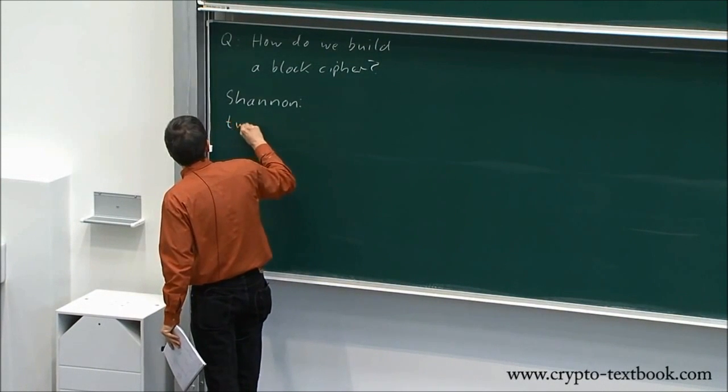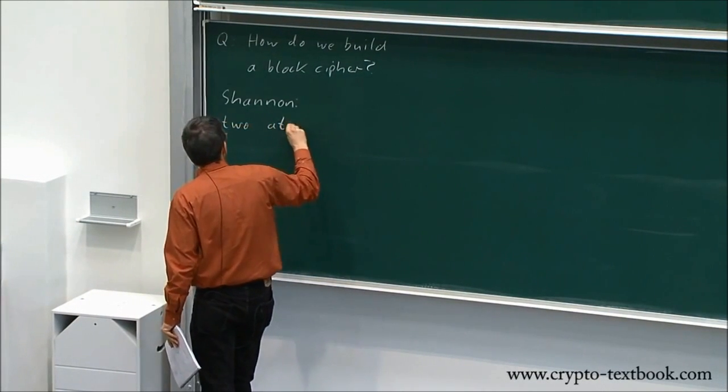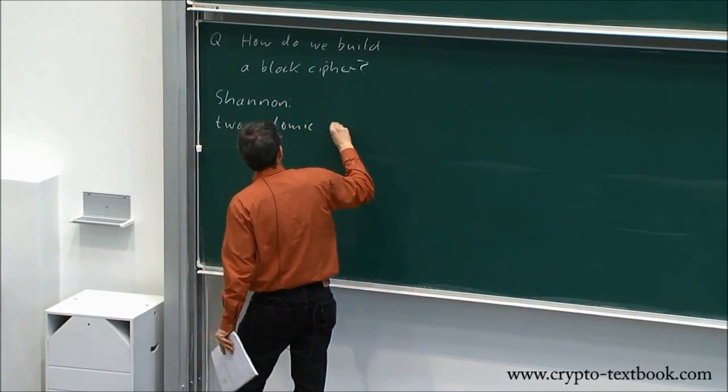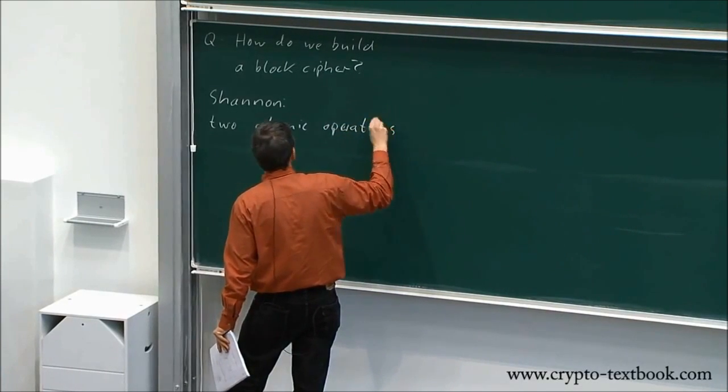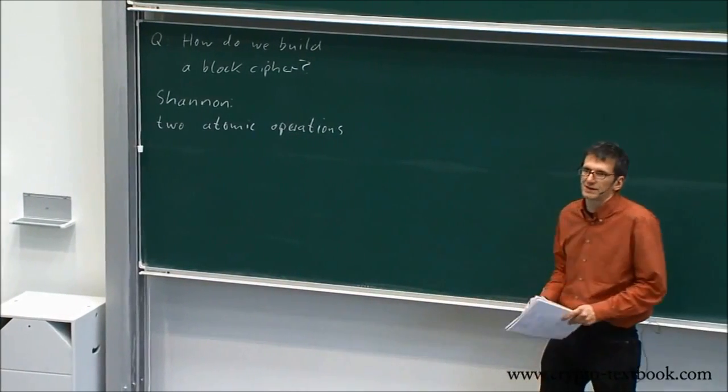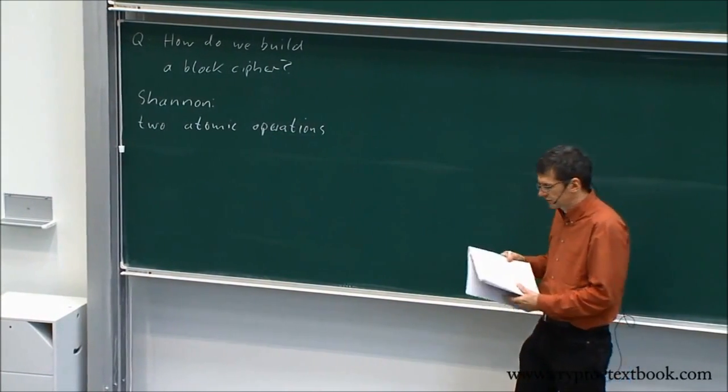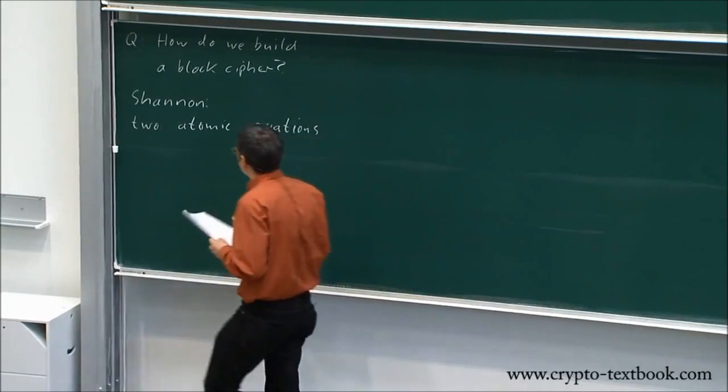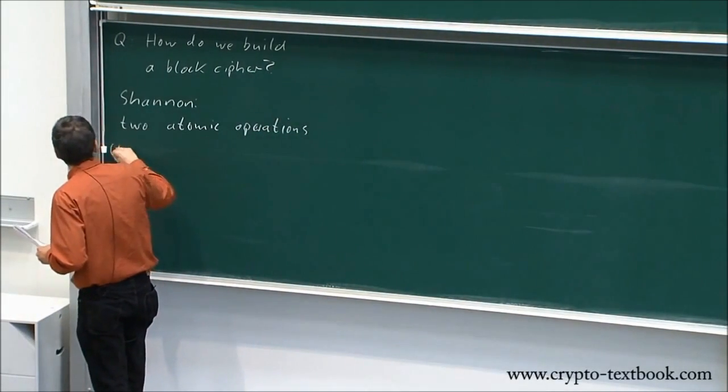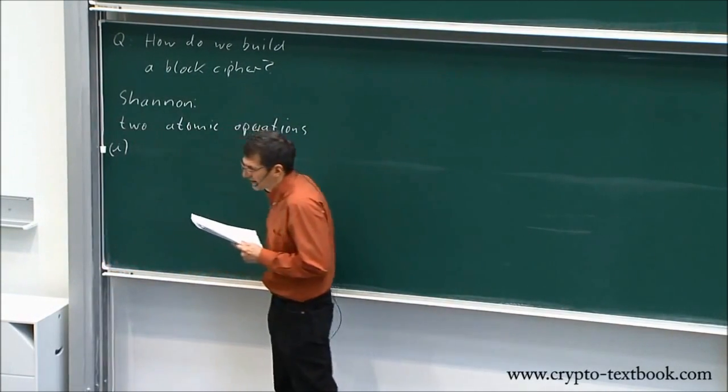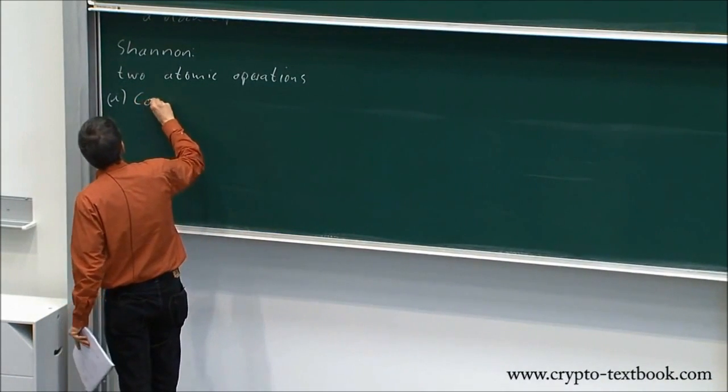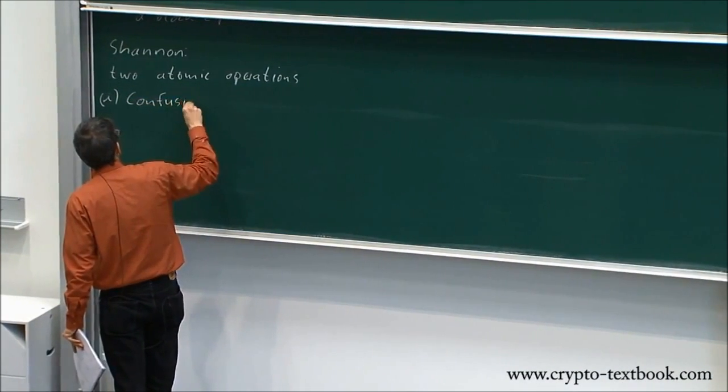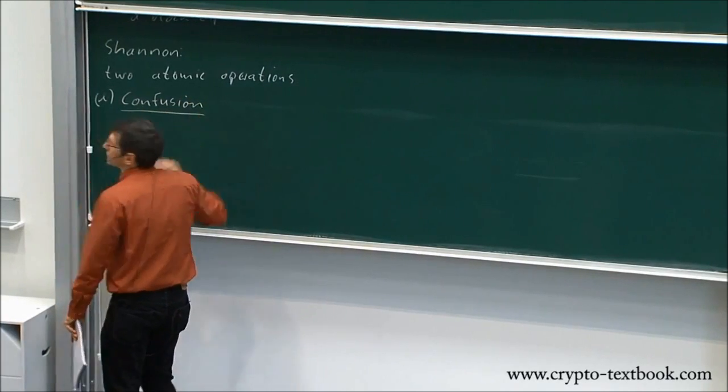He defined two atomic operations - or basic operations, atomic is maybe a bit too ambitious - some basic operations that each block cipher should perform. The first one is called confusion.